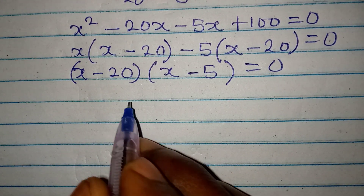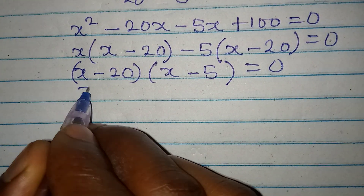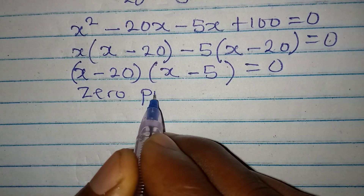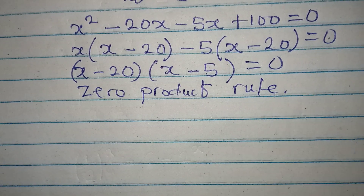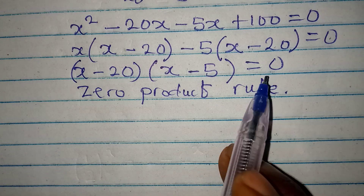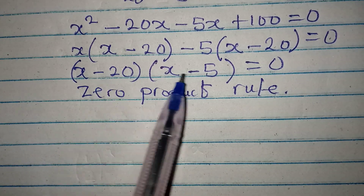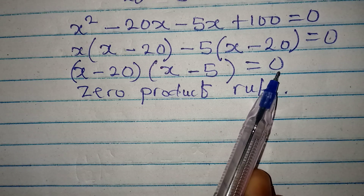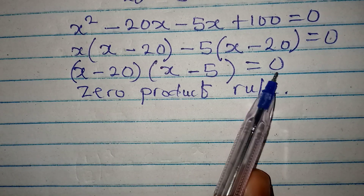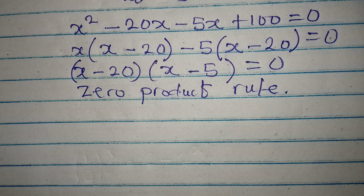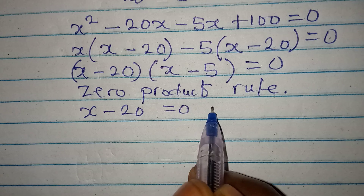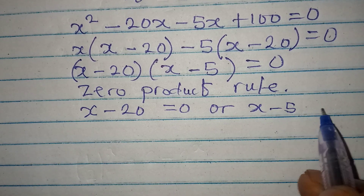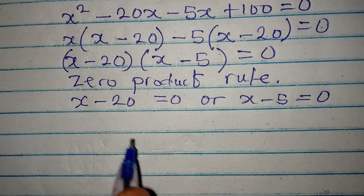Now we apply the zero product rule. You can only apply this rule when you have two factors multiplying to give zero, because that means either of them must equal zero. So x minus 20 equals zero, or x minus 5 equals zero.